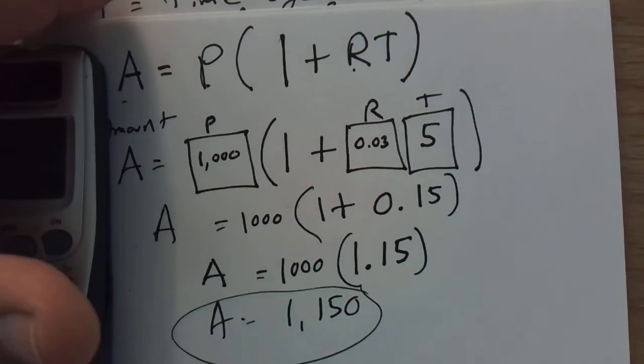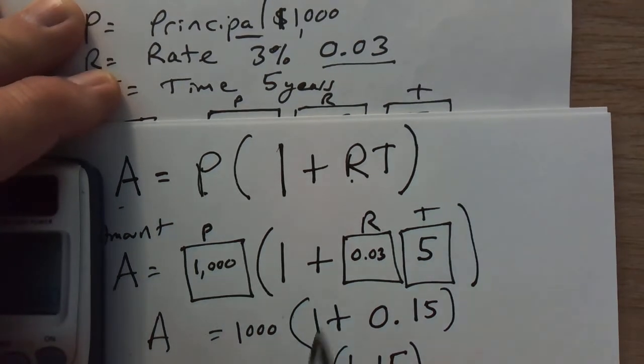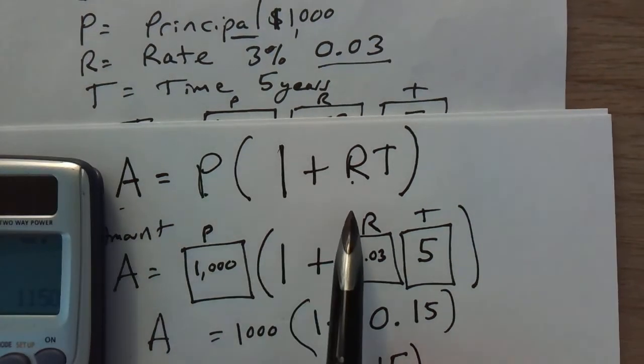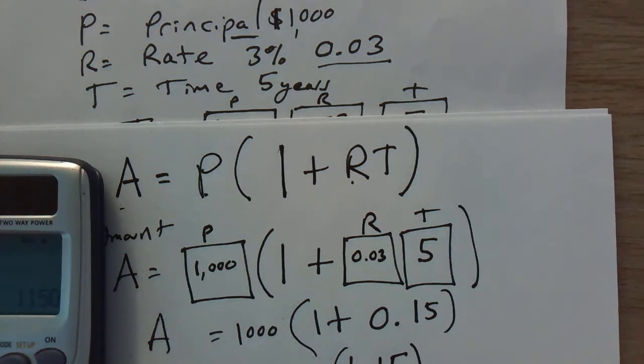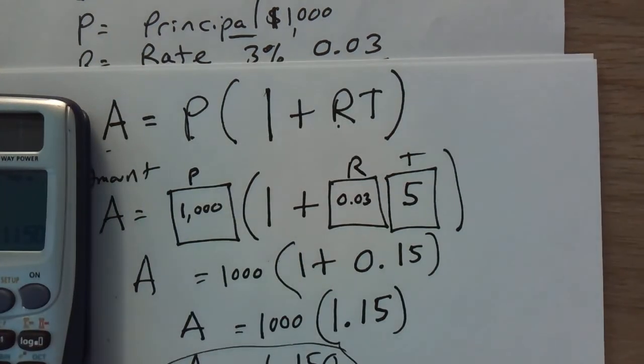So we get the same result with a slightly different formula. This one already adds the principle back in - that's what that one plus is all about. It's adding the principle back in on the front end so you don't have to remember to add it at the end. So that is two different ways to calculate simple interest. I hope you found this helpful.